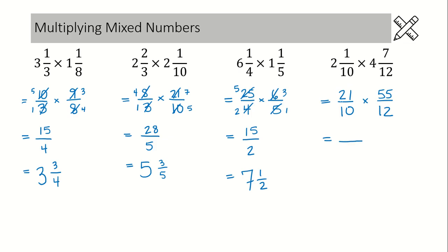In this example, we have a 21 in the numerator and a 12 in the denominator. They can both be divided by 3. 21 divided by 3 is 7, and 12 divided by 3 is 4. And then we have a 55 in the numerator, a 10 in the denominator. They can both be divided by 5, and so that will leave us with 11 here and 2 there.